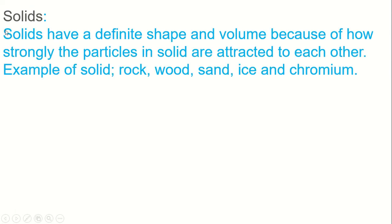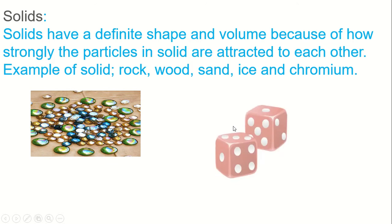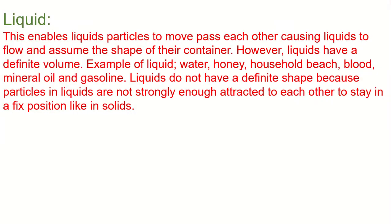Now explain about solids. Solids have a definite shape and volume because of how strongly the particles in solids are attracted to each other. Example of solids: rock, wood, sand, ice, etc. Here are two pictures of solid substance.